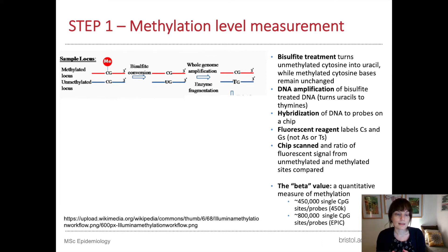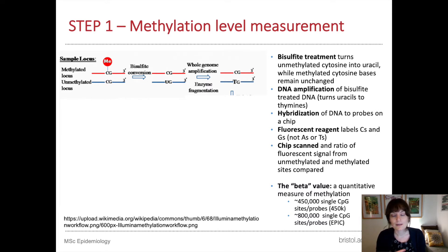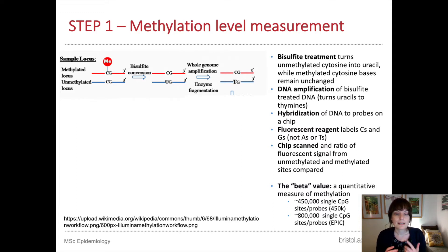Then the DNA is amplified — basically we make more of it — and this turns the uracils into thymines, so U's into T's. What started out as a methylated cytosine stays as a cytosine, but what started out as an unmethylated cytosine becomes a thymine. In this step, the DNA is also split up into smaller fragments by enzymes.